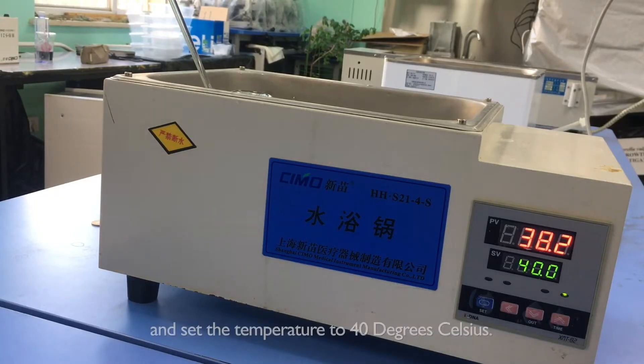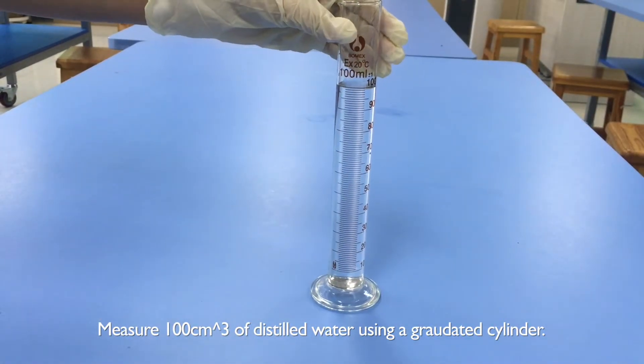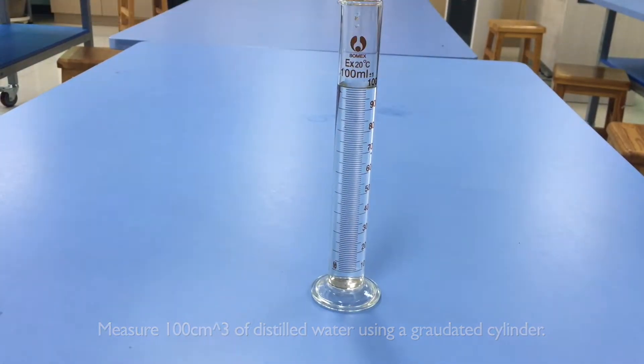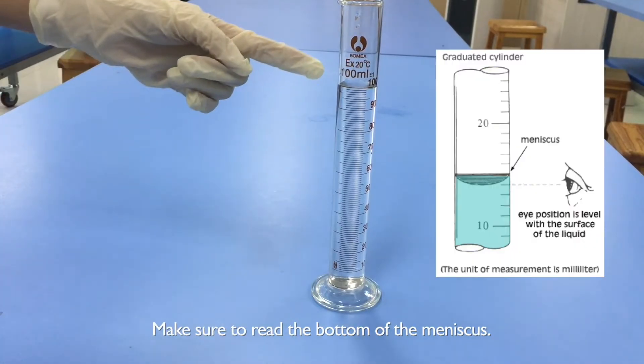Pour water into a water bath and set the temperature to 40 degrees Celsius. Measure 100 cubic centimeters of distilled water using a graduated cylinder. Make sure to read the bottom of the meniscus.